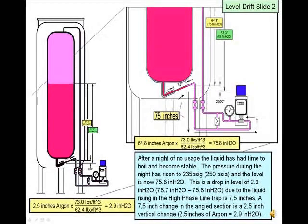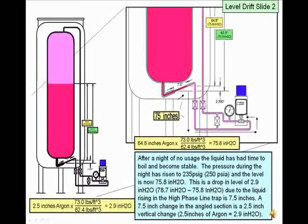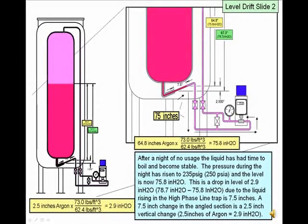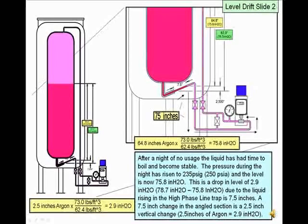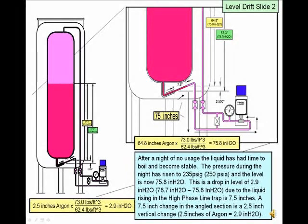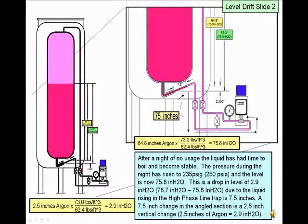As described previously, the tank ended the day in a light boiling mode. During non-usage, the tank's pressure will rise until the liquid has resaturated and the tank pressure has risen to that saturation pressure. In this example, the tank pressure rose to 235 PSI gauge pressure. 210 PSI to 235 PSI is approximately a 10% change in pressure. With a 75-inch gas space above the liquid in the high phase line, ideal gas laws mean the liquid in the trap will move 7.5 inches. The slope of the high phase line results in a 2.5-inch vertical change. 2.5 inches of argon is equal to 2.9 inches of water, resulting in a new gauge reading of 75.8 inches of water.